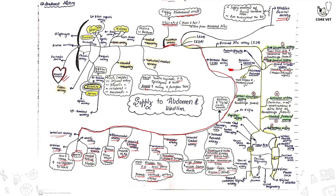The pudendoepigastric artery divides into the posterior abdominal artery and the external pudendal artery. The posterior abdominal artery anastomoses with the anterior abdominal artery. The external pudendal artery supplies the mammary gland in females and the external covering of the glans in males. The lateral circumflex artery also supplies the quadriceps femoris. The genicular artery supplies the sartorius, semimembranosus muscle, and the distal part of the quadriceps femoris — muscles of the medial aspect of the hindlimb.